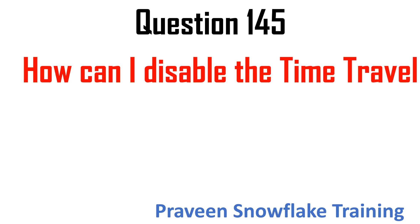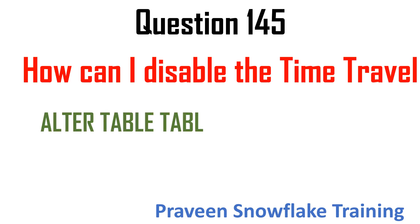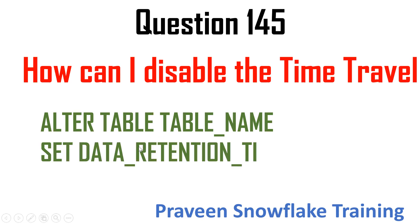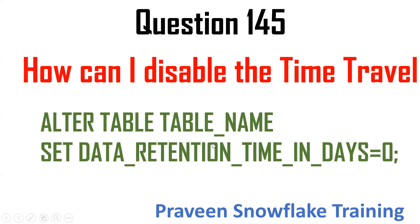Next question: how can I disable time travel? If you don't want time travel on a particular table, use: ALTER TABLE table_name SET DATA_RETENTION_TIME_IN_DAYS = 0. By setting this parameter to zero, you disable time travel, meaning features like UNDROP and time travel queries will no longer work on that table.